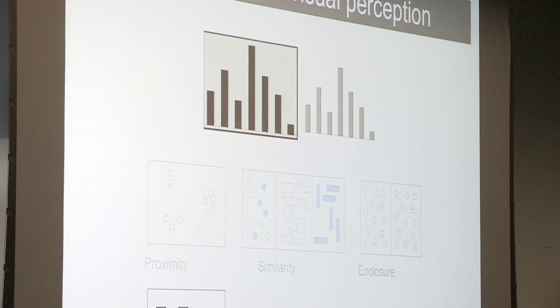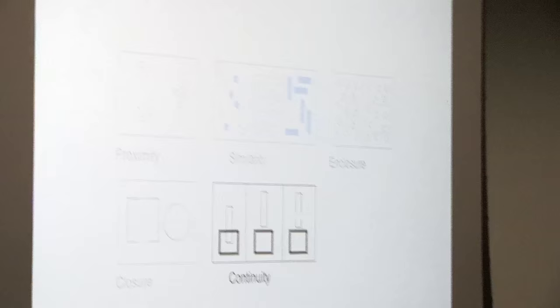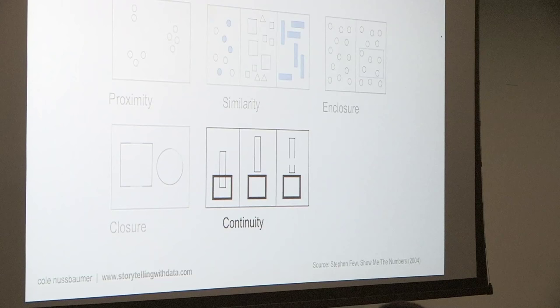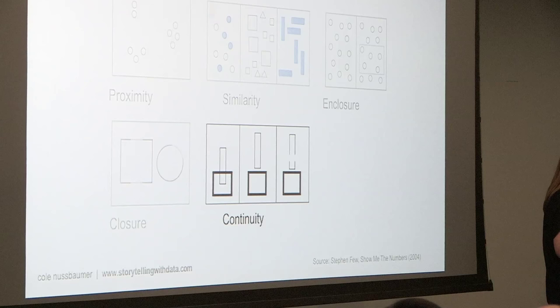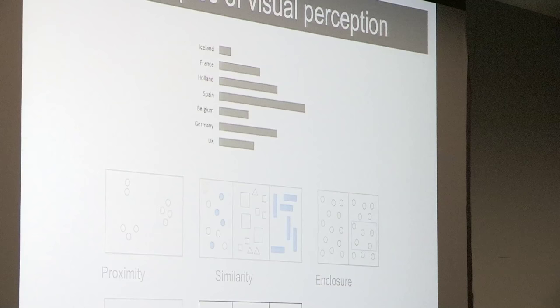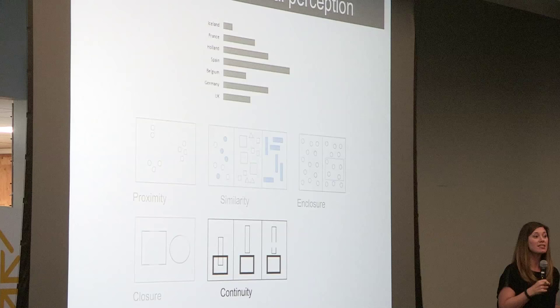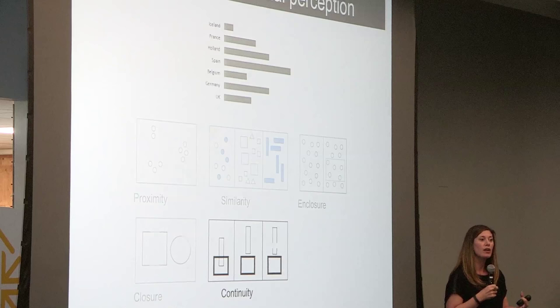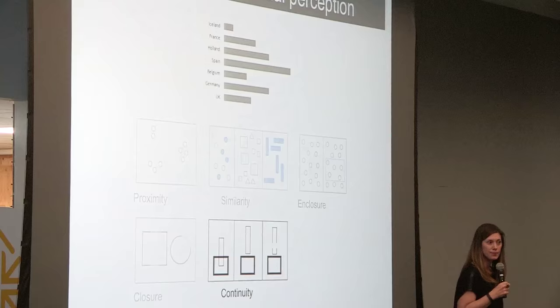The next principle is continuity — similar to closure. If you take objects apart, most people expect a continuous path rather than an alternative interpretation. Our eye likes to draw continuous lines even where they may not explicitly exist. One way to leverage this in graphs is to think about what we can strip out without losing anything. For example, taking out the Y axis line altogether — your eye still sees it because of the continuity of space between the text and the data. As we strip unneeded elements away, our data stands out more.